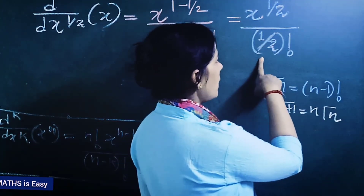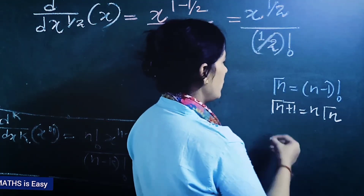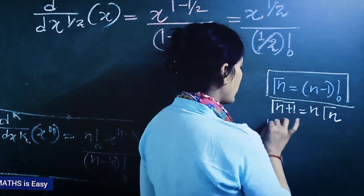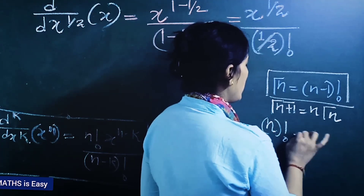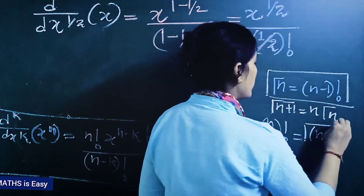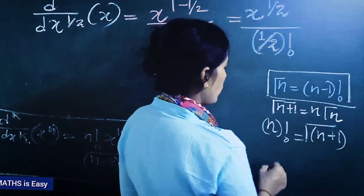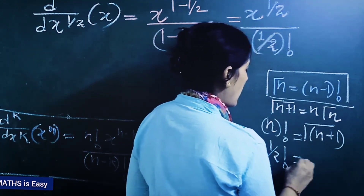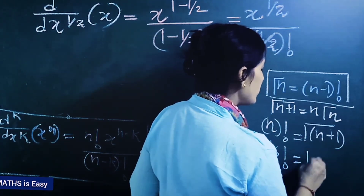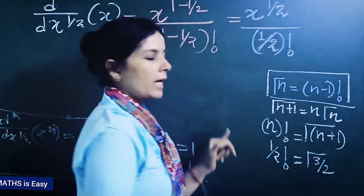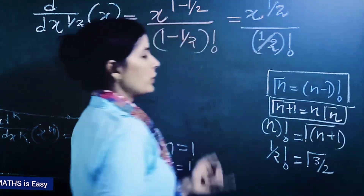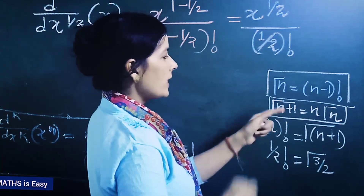The question is how to solve (1/2) factorial. Using the relation n! = γ(n+1), we get (1/2)! = γ(1/2 + 1) = γ(3/2). And γ(3/2) can be calculated using the property γ(n+1) = n·γ(n).